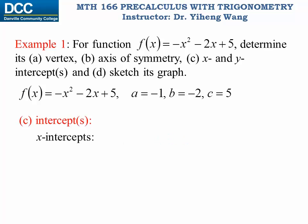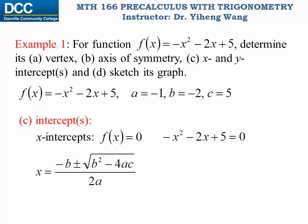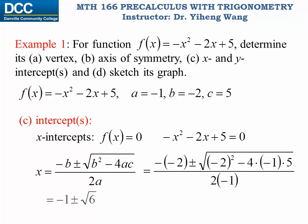For the x-intercepts, we find the zeros by setting the function equal to zero and solving for x. Sometimes the function can be factored easily, but here we'll use the quadratic formula — you need to know it by heart. Substituting a = −1, b = −2, and c = 5, we get x = −1 ± √6. Therefore the x-intercepts are (−1 + √6, 0) and (−1 − √6, 0).